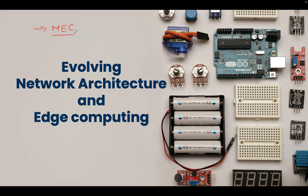In 6G, we are talking about applications which will have data rates of 1 Tbps and latencies of 0.1 milliseconds. To achieve this, we need a much better network architecture where we can deploy these applications very close to the base station, very close to the user — normally at the base station itself. That will require a lot of new technologies to be developed to support these kinds of applications.